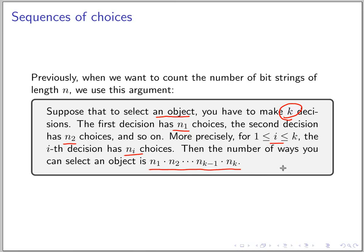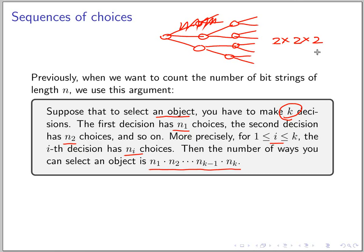It's the product of these numbers. If you recall, when we write the decision trees for the subset, we have something that looks like this. Oh, I made a mistake—there's no branch here. Every step you have two choices, so in the end you have 2³, which is 2 times 2 times 2 ways.